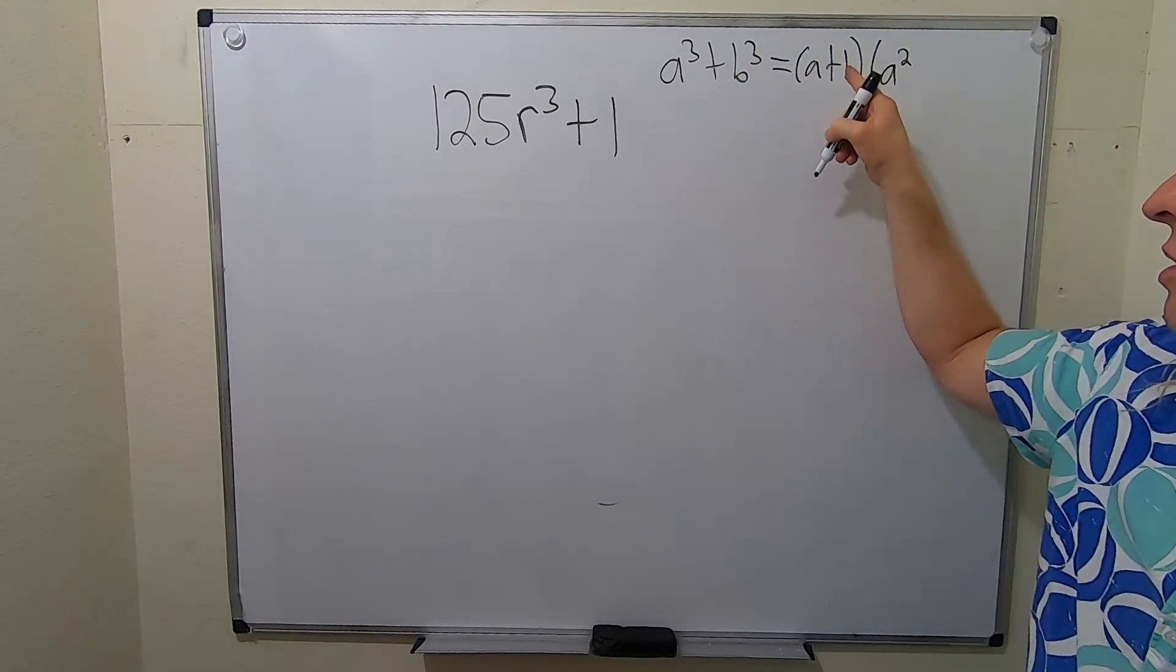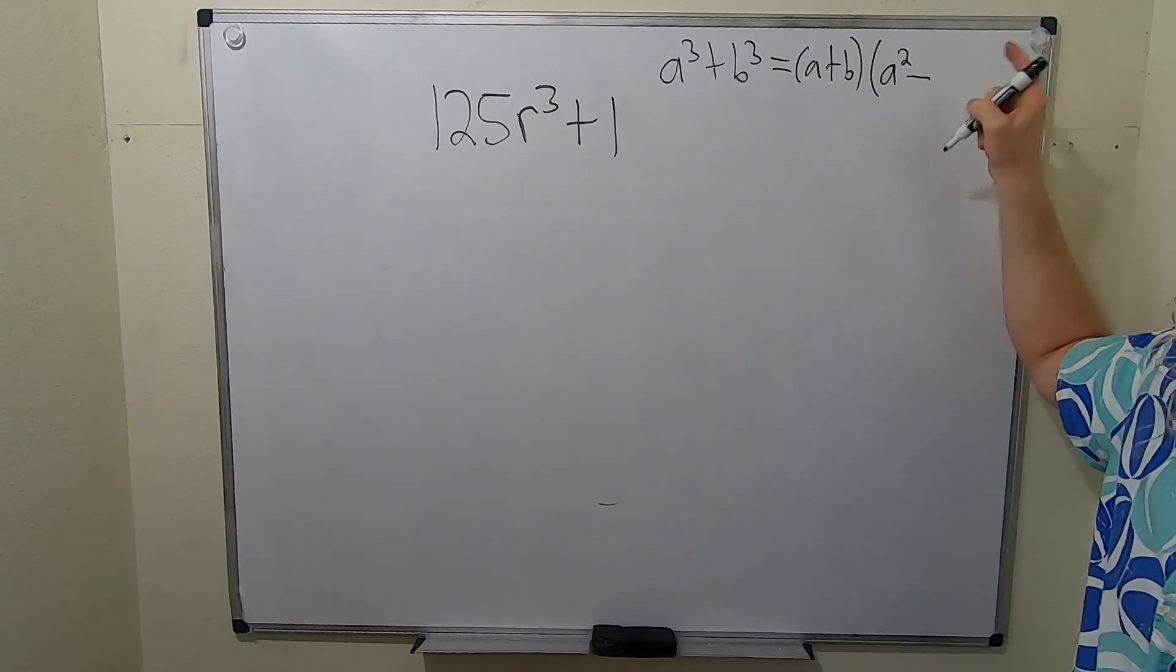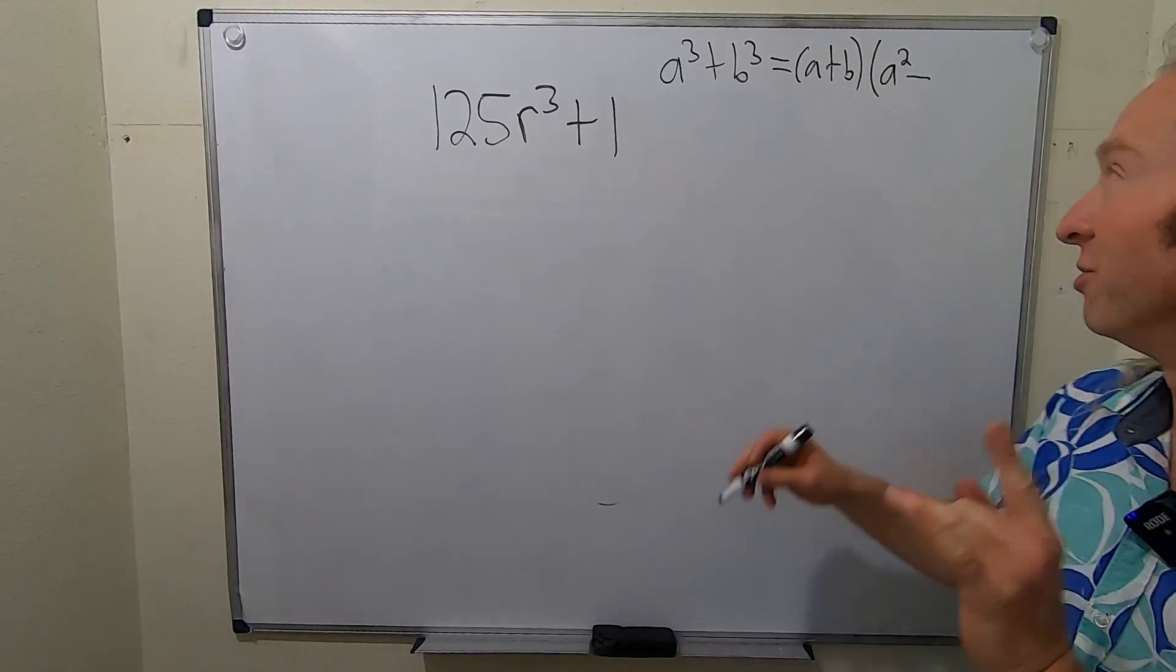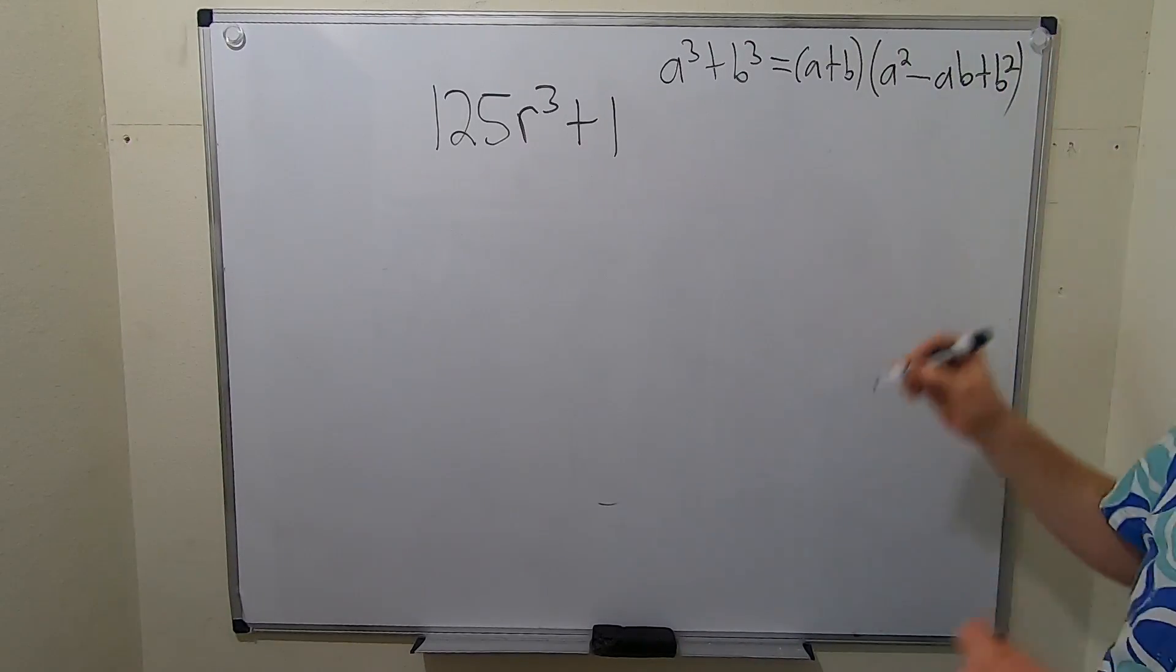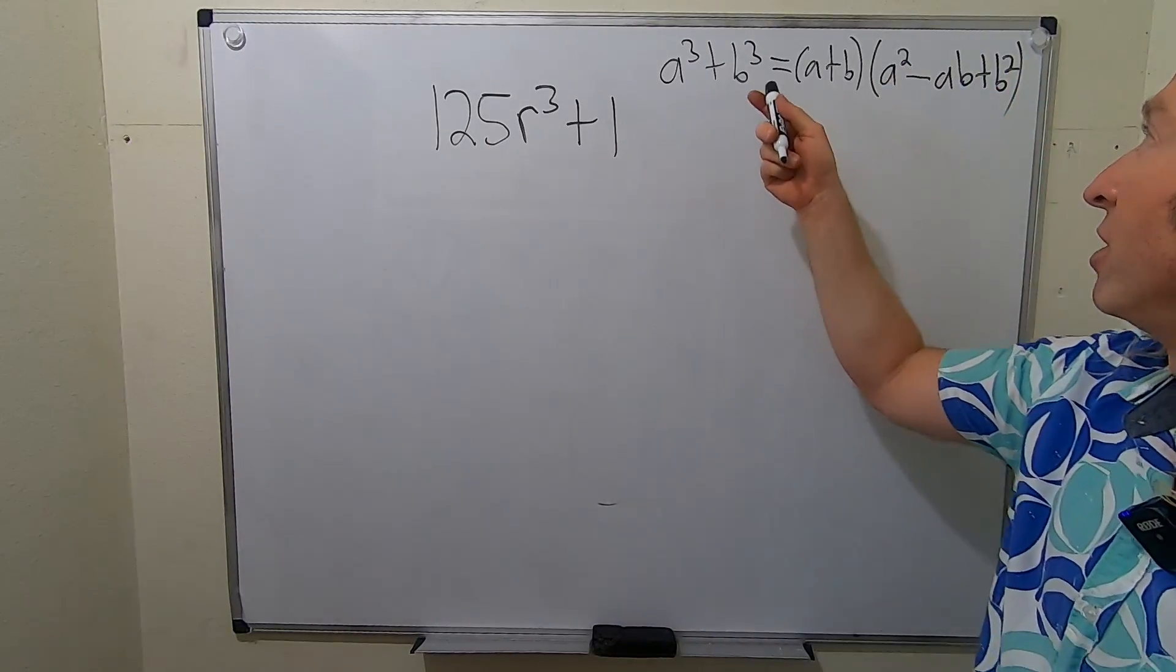Then you switch the sign, so keep, switch. And I always think it should be 2ab, but I know it's wrong. I know it's ab. It's a terrible way to memorize it, plus b². Hey, but whatever works, right? Use whatever it takes to memorize it.